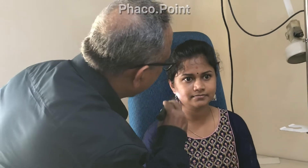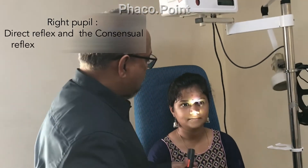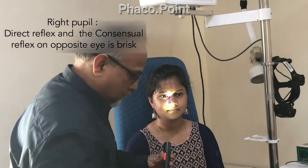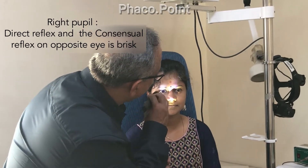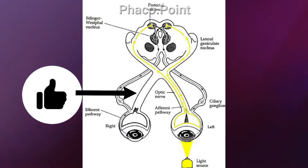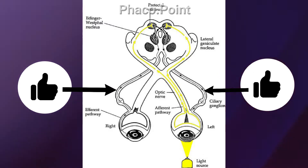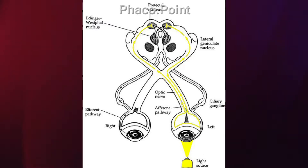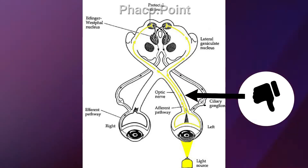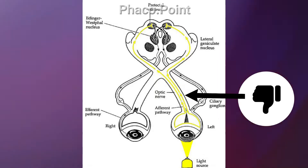Now let us examine the right eye pupil. Come to the right side of the patient, ask the patient to fix at a distant target, and check the pupillary reflex — the right pupil is reacting briskly to light. The consensual light reflex is also brisk. This means the right afferent limb or right optic nerve is functioning normally, as well as both the left and right third nerves, which is why the direct and consensual light reflexes are brisk. This pins the lesion down to the left optic nerve.